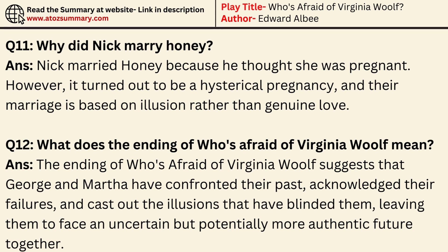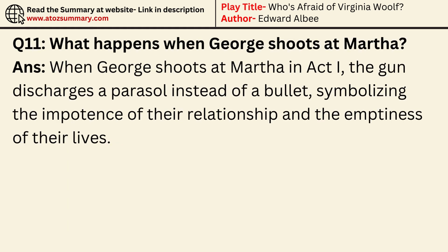What does the ending of Who's Afraid of Virginia Woolf mean? The ending suggests that George and Martha have confronted their past, acknowledged their failures, and cast out the illusions that have blinded them, leaving them to face an uncertain but potentially more authentic future together. What happens when George shoots at Martha? When George shoots at Martha in Act 1, the gun discharges a parasol instead of a bullet, symbolizing the impotence of their relationship and the emptiness of their lives.